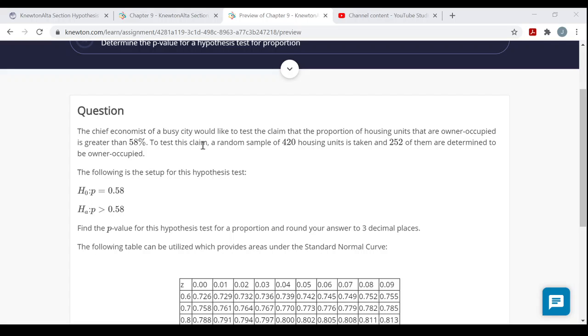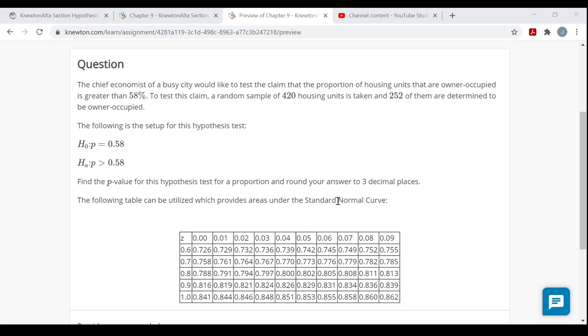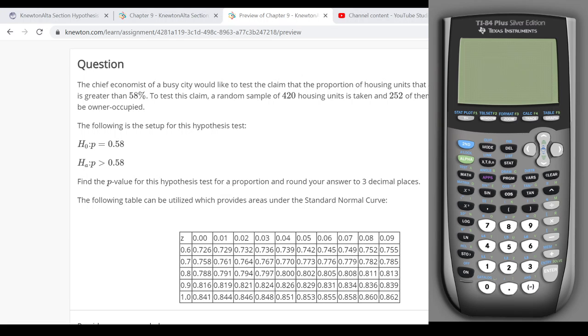To test this claim, a random sample of 420 housing units is taken, and 252 of them are determined to be owner-occupied. Then they want us to find the p-value for this particular hypothesis test. All right, so I'm going to pull up a calculator right now because we can do this right now.